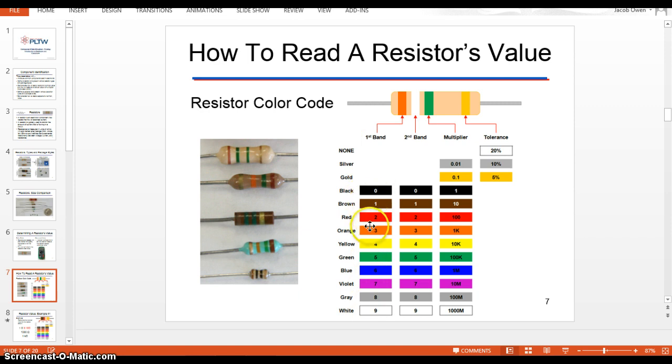There's four bands, and it's better when the fourth one's kind of a little bit further away like this one is, but that's not always the case. The first band tells you the first digit in the resistance. And this is the code right here: black, brown, red, orange, yellow, green, blue. The second color tells you the second digit.